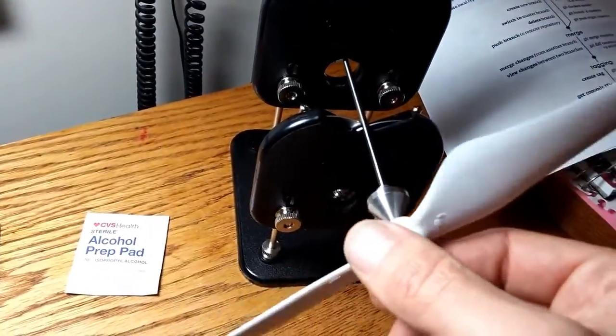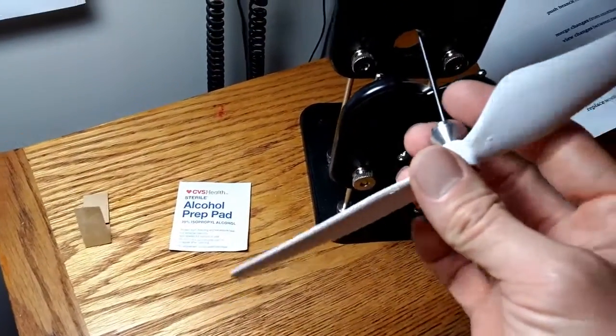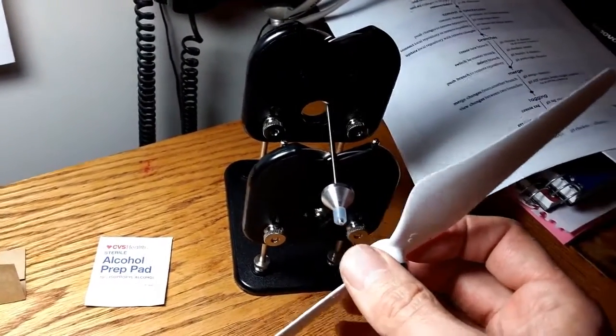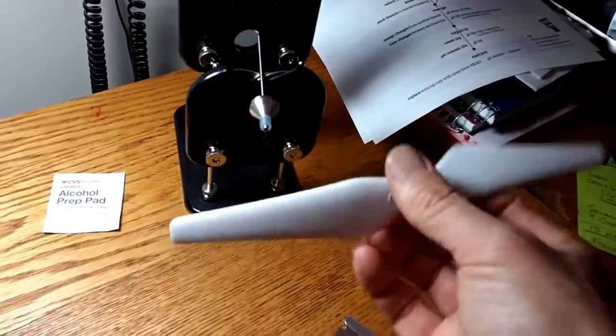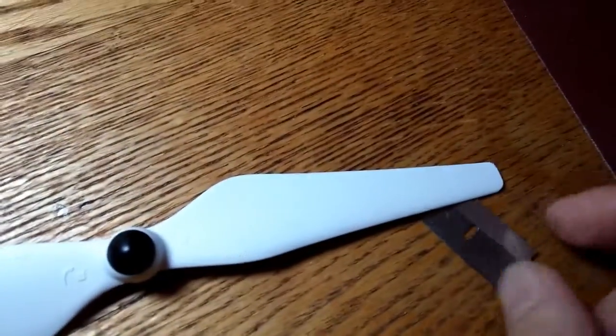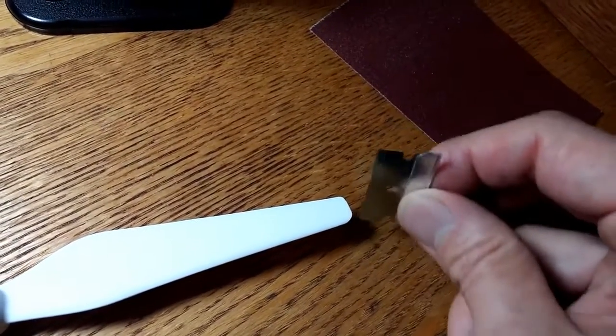Then I use my, what's this called, a Dubrow balancer. I use the Dubrow balancer to get a sense of which end is heavier. If this end were heavier, then I would shave more off the end and try to get it into balance.